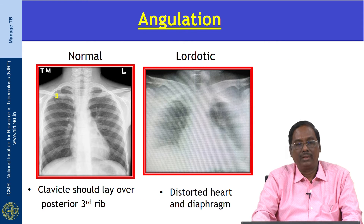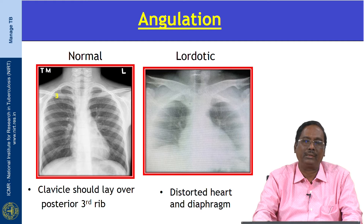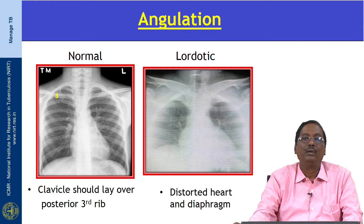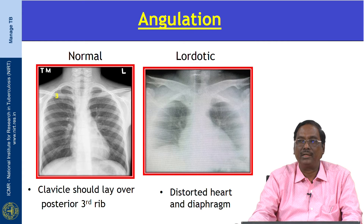Angulation: in a properly angulated X-ray, the patient stands erect and the X-ray passes from posterior to anterior in a horizontal line without any angulation either tilted up or down, centering at T5. In a properly angulated film, the clavicle should lie over the posterior third rib. This is a lordotic view, where the X-ray tube has been tilted up, producing distortion of the heart and the diaphragm.